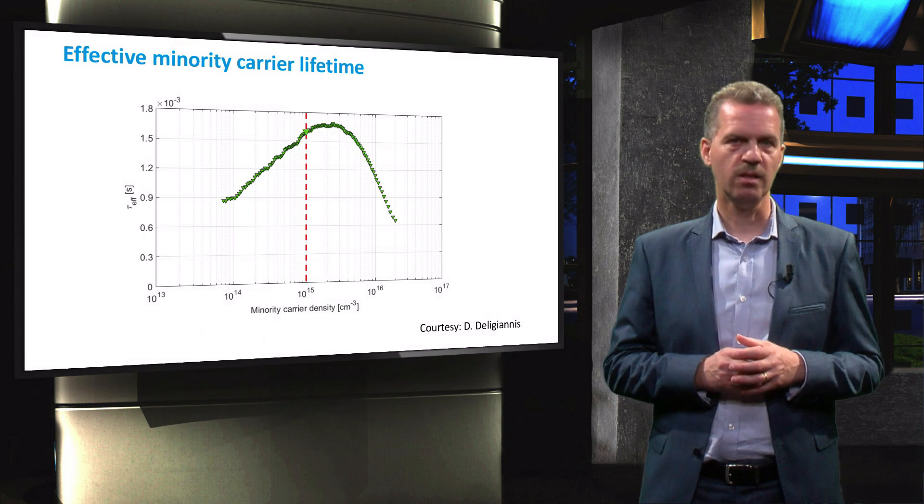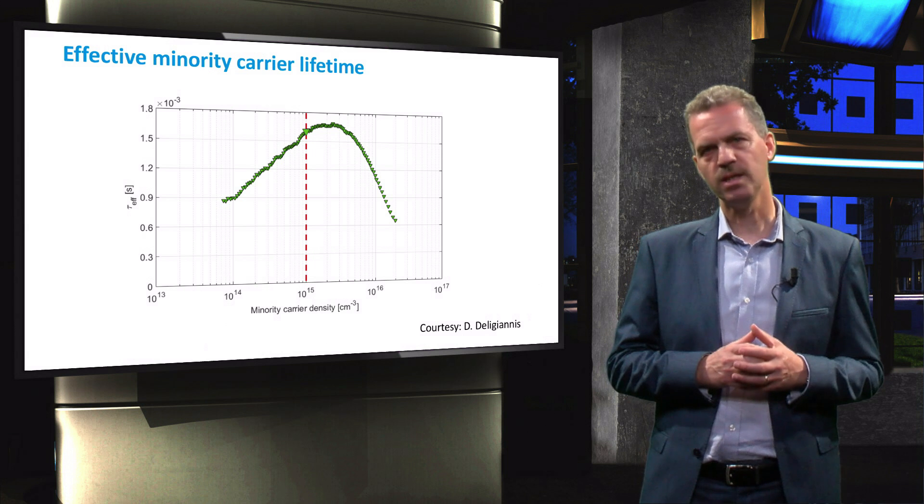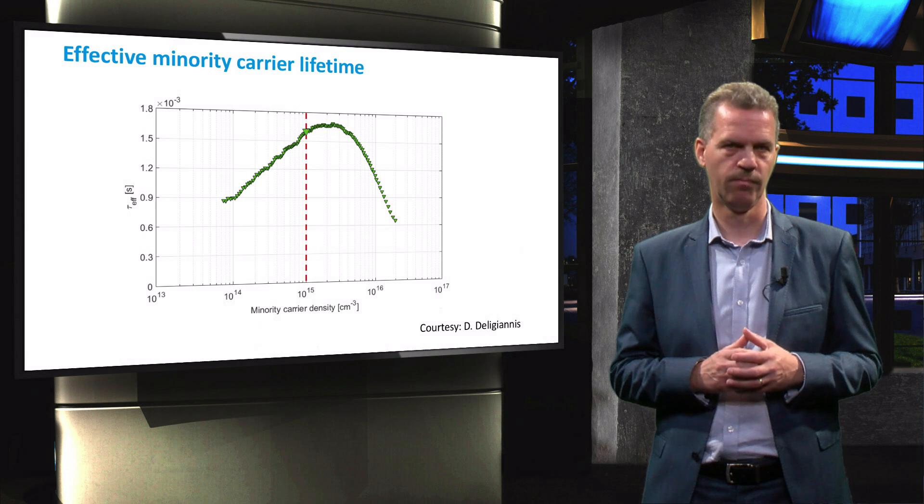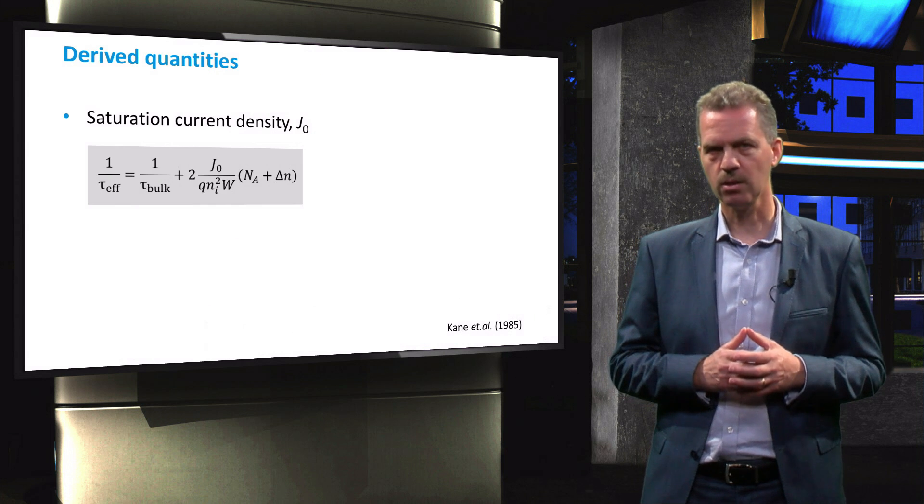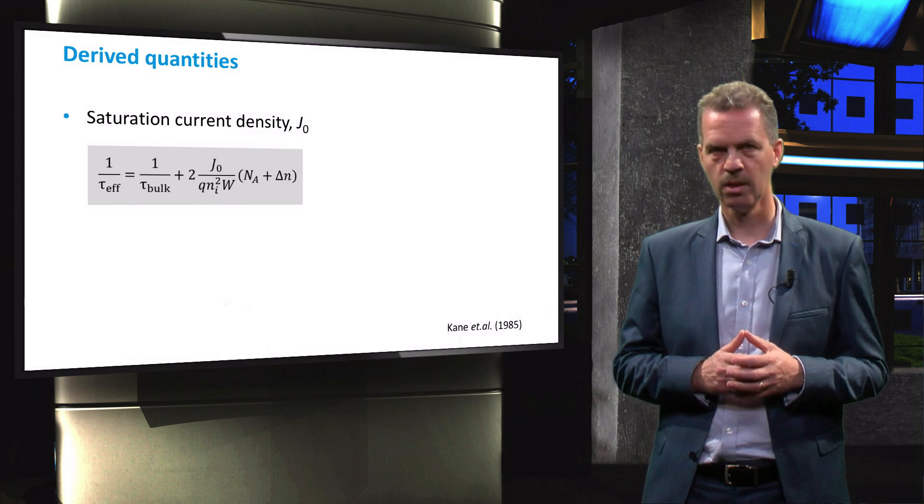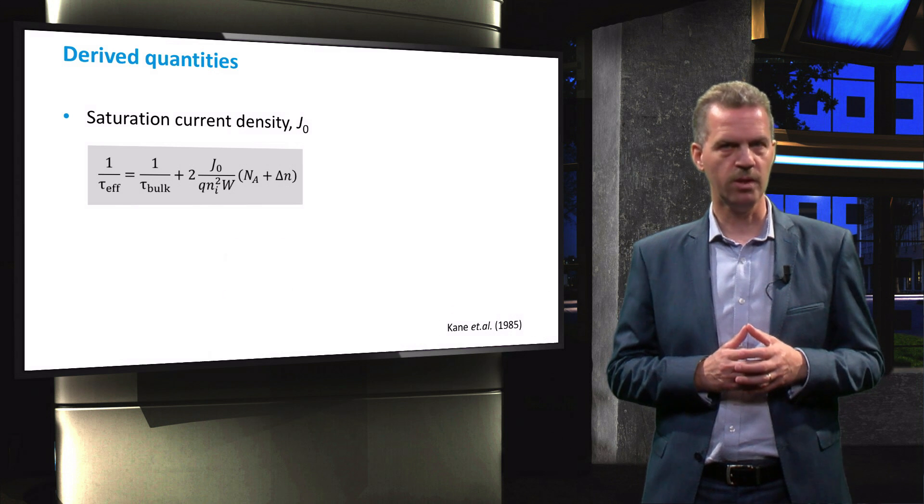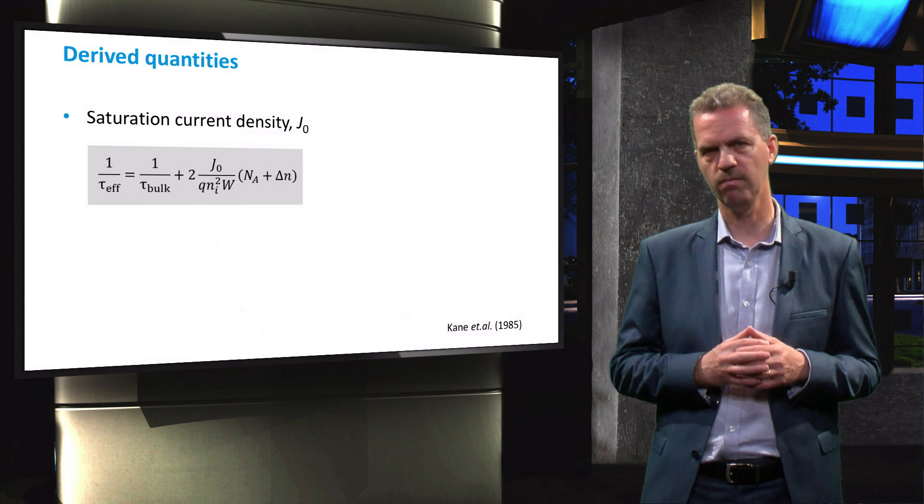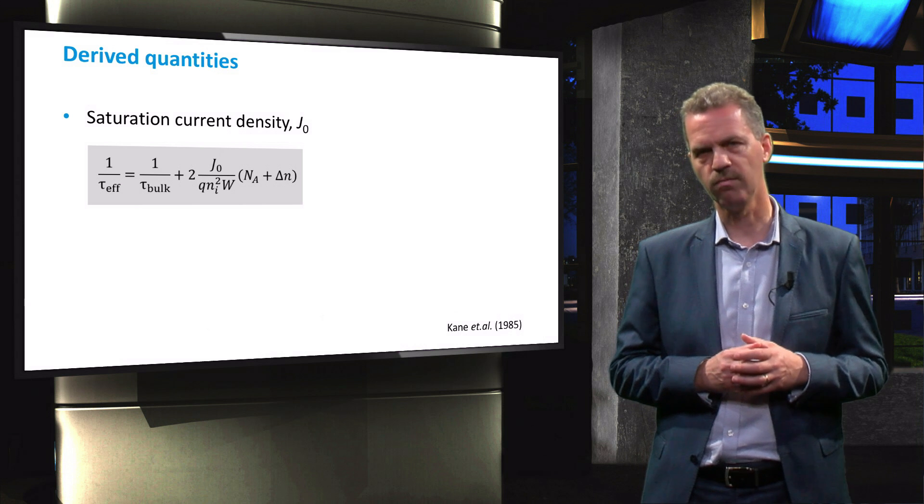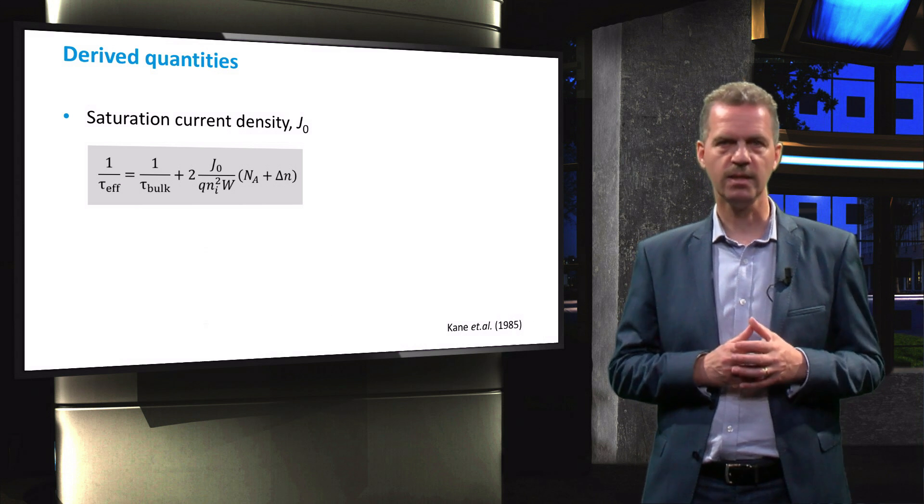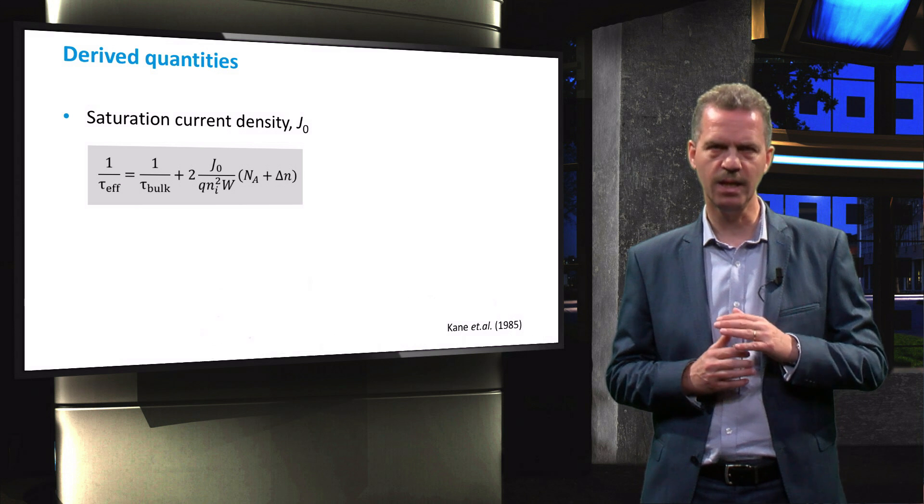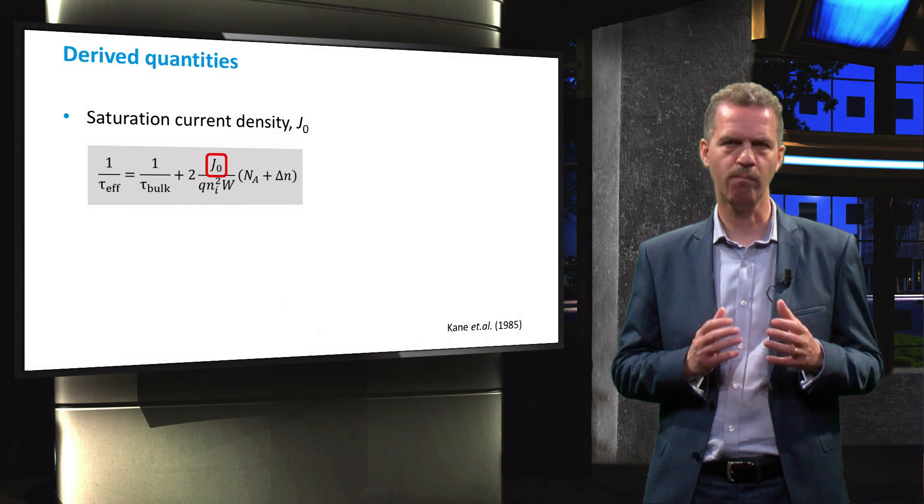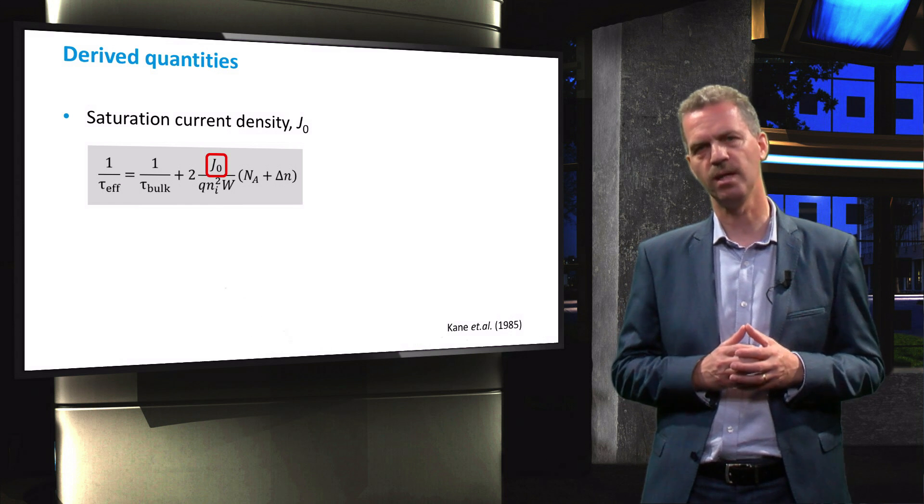From the lifetime measurement on different structures, several quantities can be derived that give information on the recombination rate in the structures. The first quantity is the saturation current density J0. The expression below can be derived when we assume that the carrier density is reasonably homogeneous as a function of position in the device, implying that the surface recombination velocity is low. For that case, the effective lifetime varies linearly with excess carrier density, and the slope of this variation is proportional to the saturation current density J0.